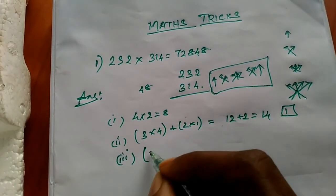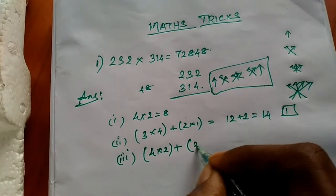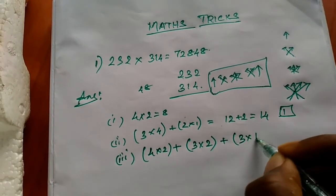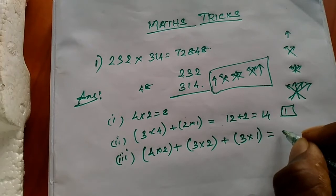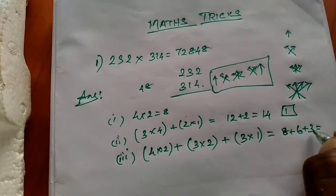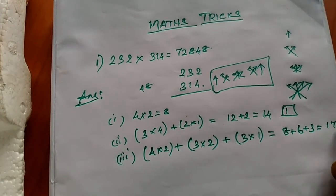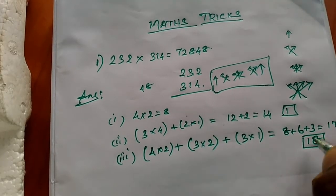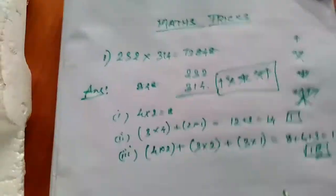Step three, the cross rule: 4 into 2 plus 3 into 2 plus 3 into 1 equals 8 plus 6 plus 3 equals 17, plus carry 1 equals 18. Write 8, carry 1.